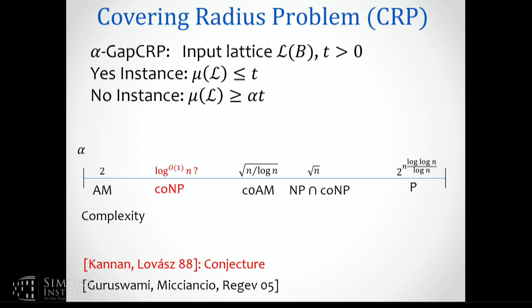Another very interesting result: if you have access to an all-powerful prover, you can upper bound the covering radius up to a factor of two. Essentially, you send the prover a random coset of the lattice and ask them to tell you the distance of that coset from the lattice — they just need to return a closest vector to a randomly given target. A randomly chosen target is basically at distance covering-radius over two, and the prover can always return a point at distance less than the covering radius. This is where the factor of two comes from — it's Arthur-Merlin.